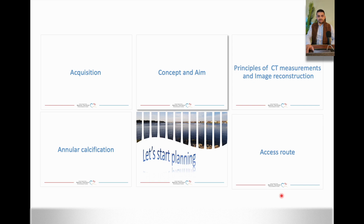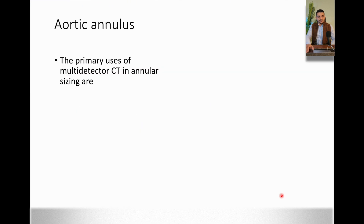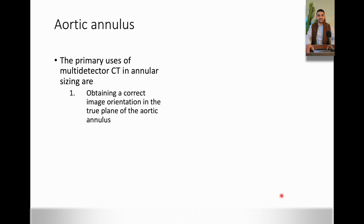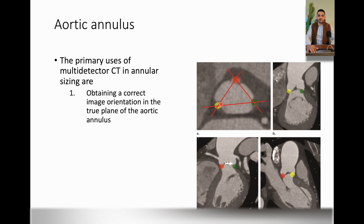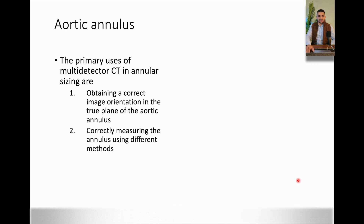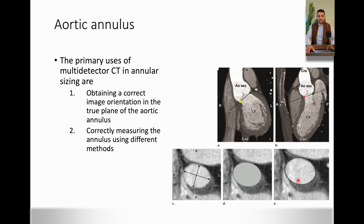These are the main principles for starting planning. The most important thing is to identify the correct nadir for each of the cusps — obtaining correct image orientation so that all three nadirs are aligned in one plane. At the upper part is the right coronary cusp nadir. The non-coronary cusp nadir is opposed to the interatrial septum. The left coronary nadir is opposed to the left main. The second key step is correctly measuring the annulus using different methods, which is only provided by the MPR.